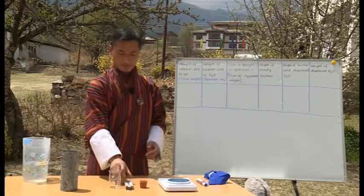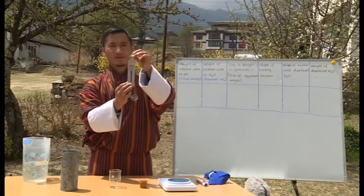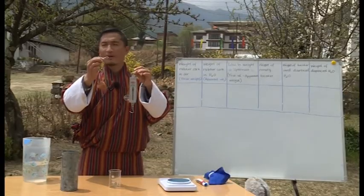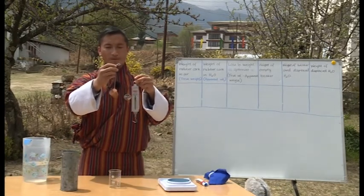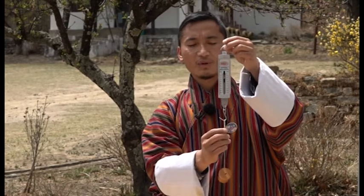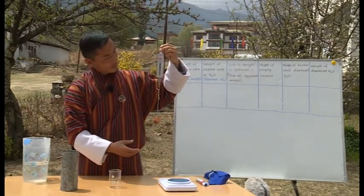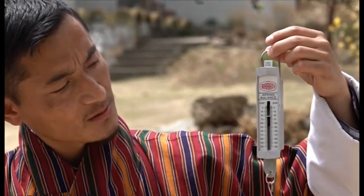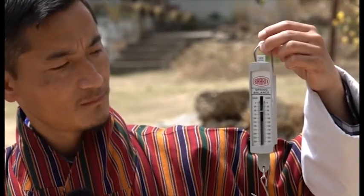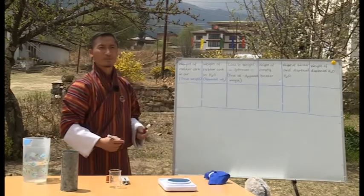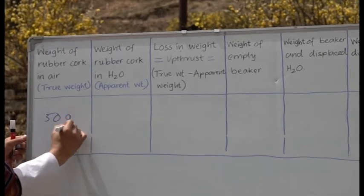Now we use the spring balance to measure the weight of the rubber cork in air. We tie the rubber cork with a piece of thread and make a small loop at the other end so it can hang from the spring balance. We are measuring the weight of this object in air right now, and the reading is 50 gram-force. We record this reading in the table.